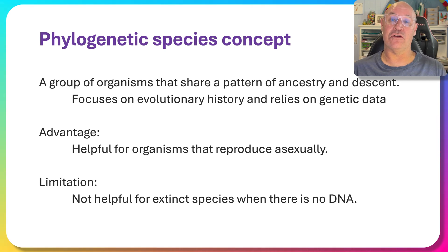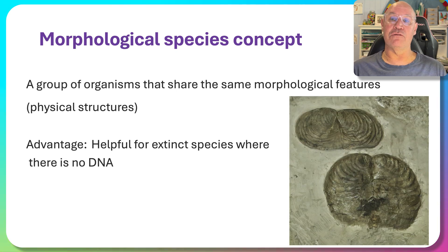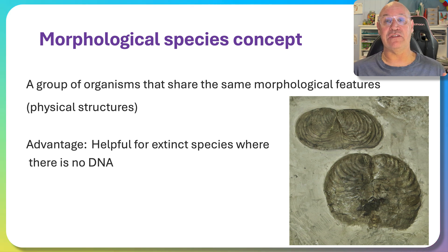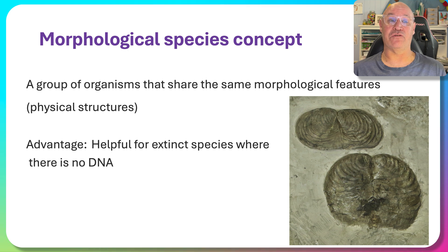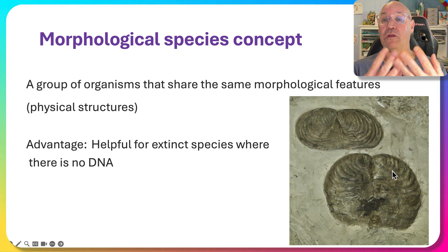However, the phylogenetic species concept is no good for extinct species with only fossil evidence, where we're not able to extract DNA. In that case, we need to rely on morphology. The morphological species concept determines if organisms are the same species based on similar morphological features — essentially, their physical structures. Do they look the same? This can be helpful when we have fossils, by making comparisons based on appearance.